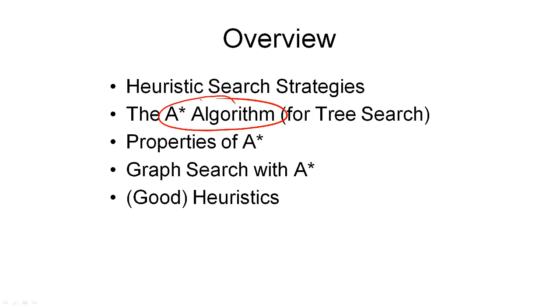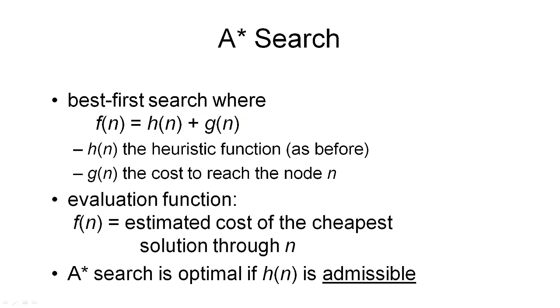A* is probably the best known algorithm in all of artificial intelligence. As far as I know, it is described in every single AI textbook. A* is simply a refinement of the best-first search algorithm we have seen earlier. The only difference to greedy best-first search is that it uses a different evaluation function.